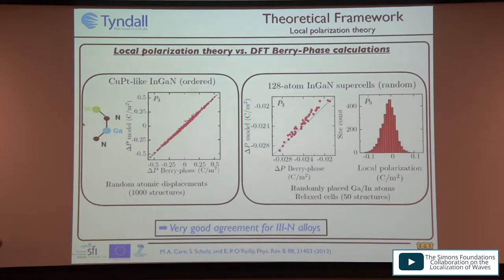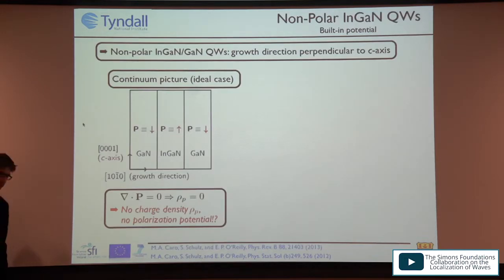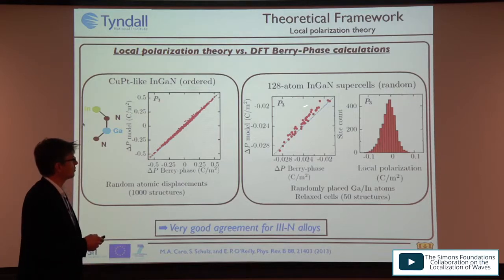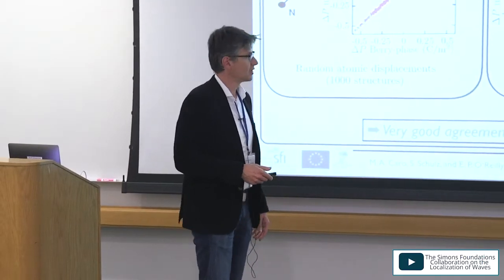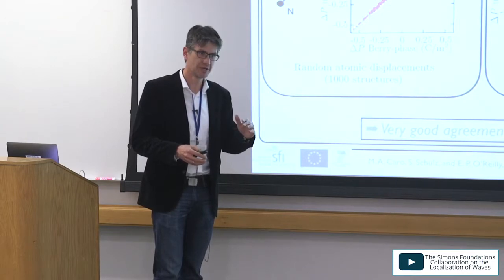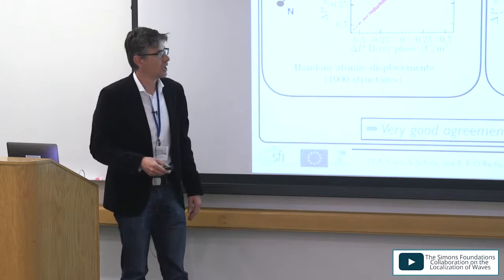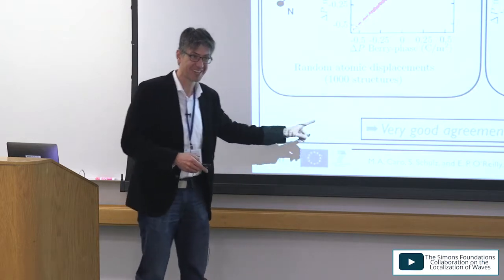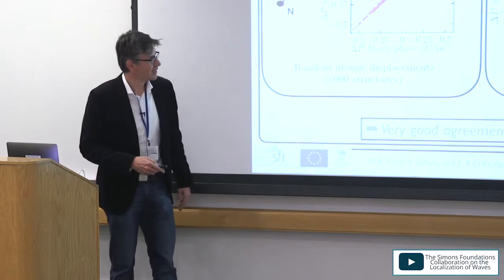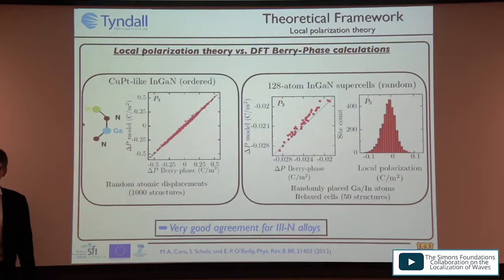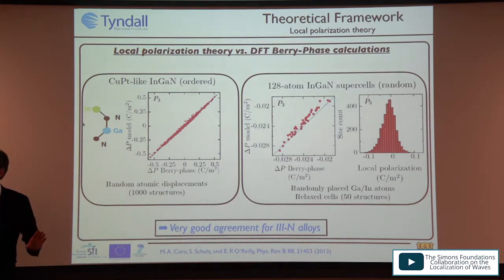There is good agreement for the InGaN alloys compared to LDA calculations. In response to the question about whether polarization is local: in a continuum picture, with growth along a non-polar direction, there should be no discontinuity in the polarization vector field and it should be an ideally field-free system. But when we calculate the local built-in potential from a point dipole model using local polarization theory, including interface steps, the local fluctuations produce local built-in potential fluctuations comparable in magnitude to those in a C-plane system. So what you think is a built-in-field-free system still has local potential variations due to local strain effects.